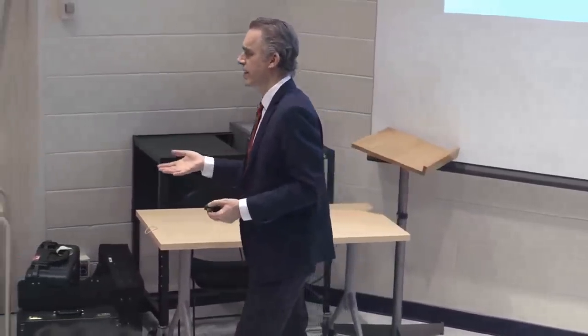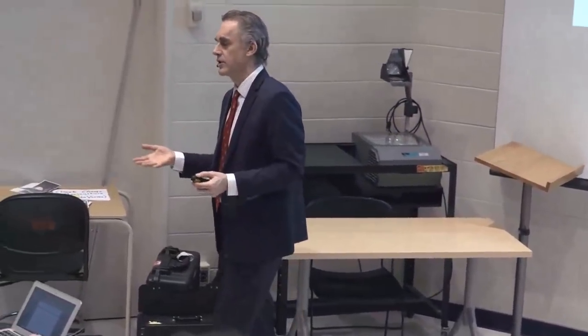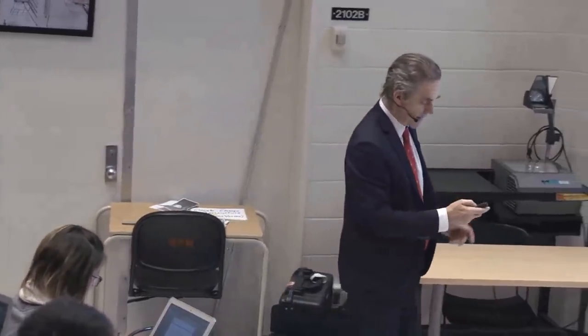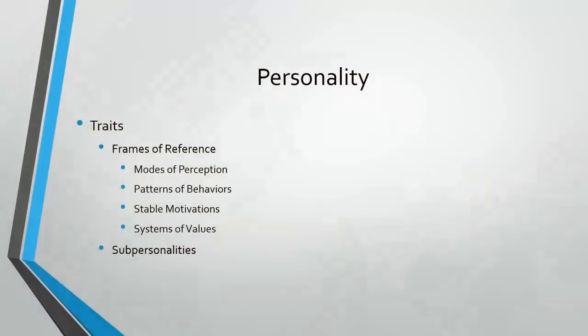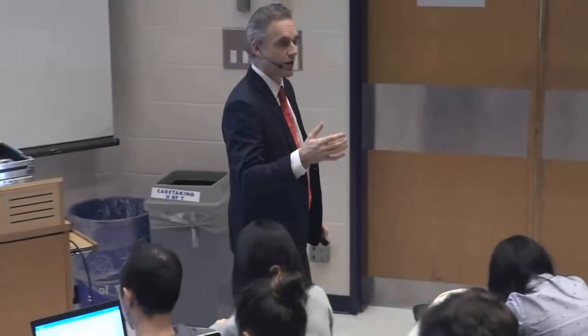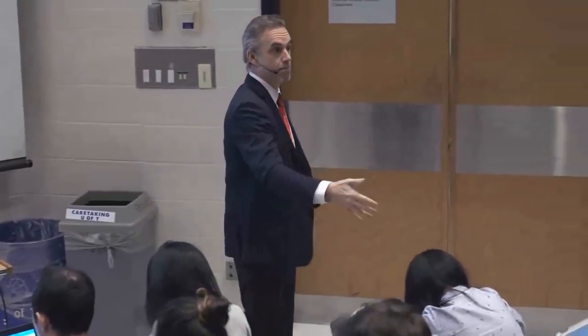The reason it's called the Big Five model is because the psychometric investigations have indicated that you can specify human personality along five basic dimensions. You might ask, what exactly is personality? — that's partly what we've been trying to wrestle with the entire course so far. Or, what exactly is a trait? Think of a trait as an element of personality.